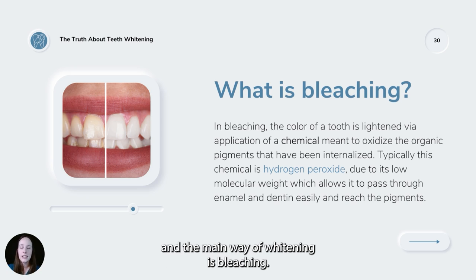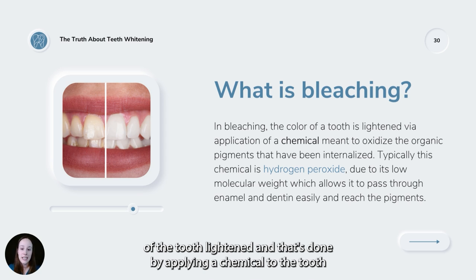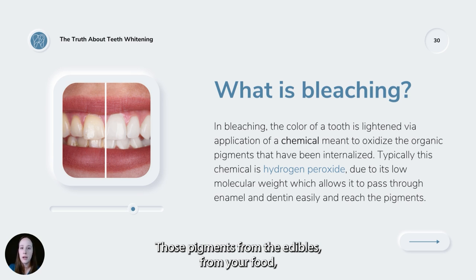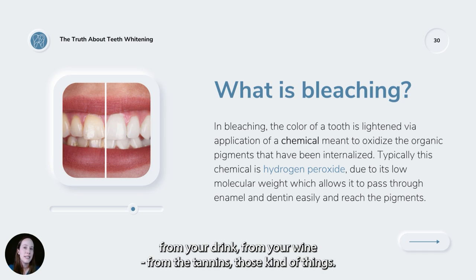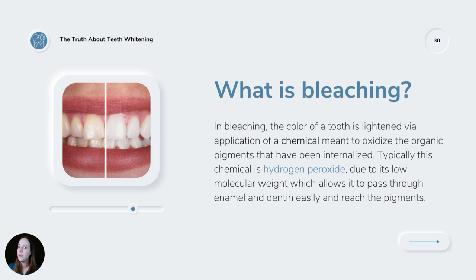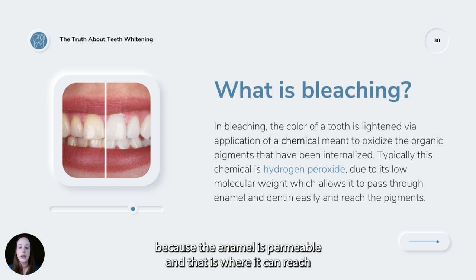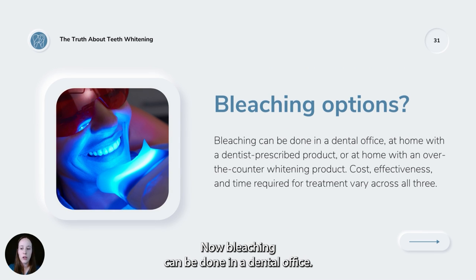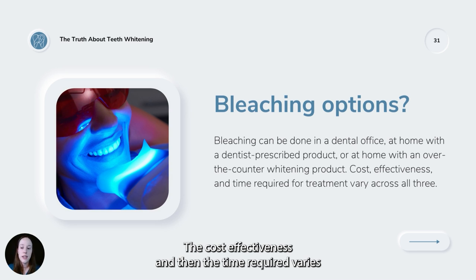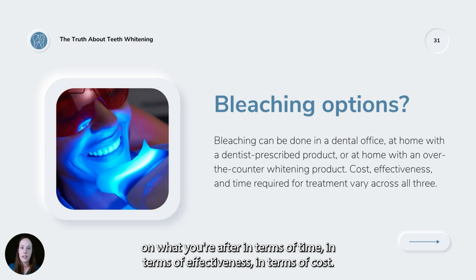The main way of whitening is bleaching. Bleaching works by applying a chemical — typically hydrogen peroxide or carbamide peroxide — to the tooth that oxidizes the organic pigments internalized from food, drink, wine, and tea. Due to its molecular weight, hydrogen peroxide can pass through the permeable enamel to reach pigments in the dentin or deeper enamel. Bleaching can be done in a dental office, at home with dentist-prescribed products, or with over-the-counter whitening products. Cost, effectiveness, and time required vary across all three.